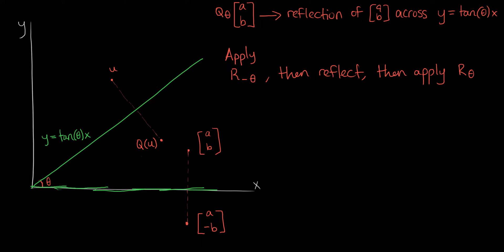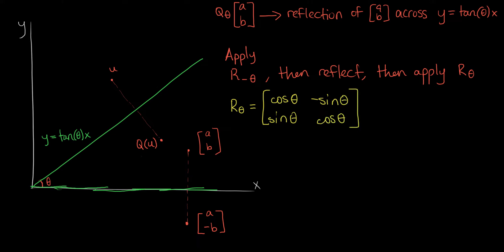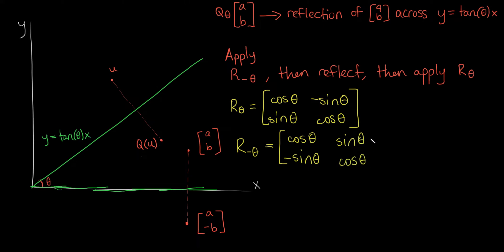If you need a refresher on the rotation matrix, you can watch the other video on this channel. The rotation matrix R(θ) is the matrix: cosine of theta, sine of theta, negative sine of theta, and cosine of theta. For R(−θ), remembering our even-odd identities, cosine stays the same with negative theta, while sine becomes negative. So R(−θ) is: cosine theta, negative sine theta, sine theta, cosine theta. Let u equal the column vector [a, b].